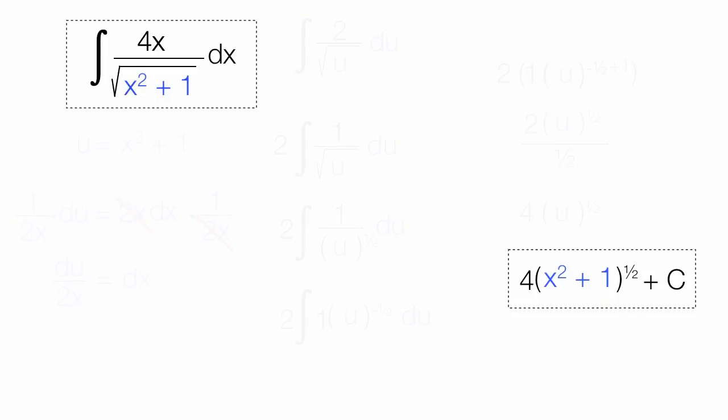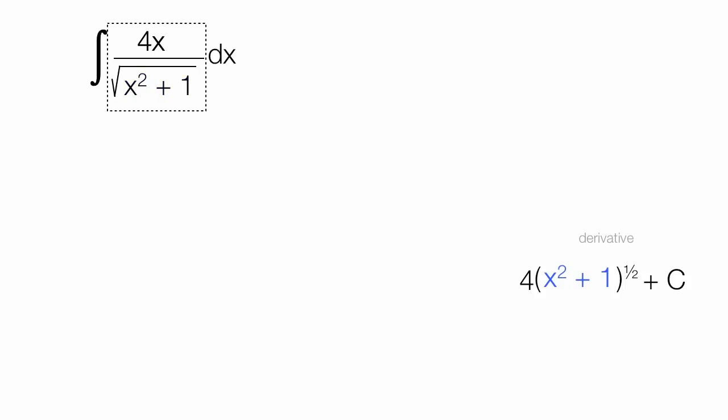Now I'm going to check my answer. You should always check your answer by taking the derivative of this bad boy down here. The first thing you can do is just lob off that c, because the derivative of any constant is nothing, 0.